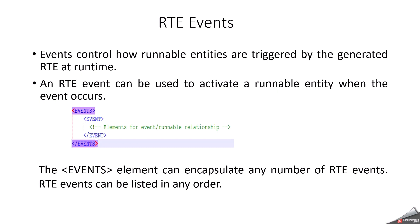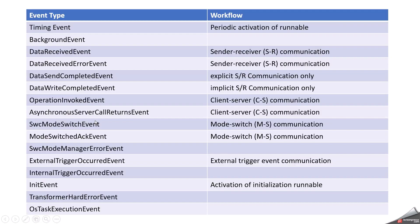You also need a runnable entity. The runnable entity is like a C function, and it will be associated with the event. The event will be mapped with the OS task — this is how the function call will happen. Whenever the runnable entity has to trigger, that is decided by the RTE event. We have multiple RTE events, and inside internal behavior you can have multiple events.